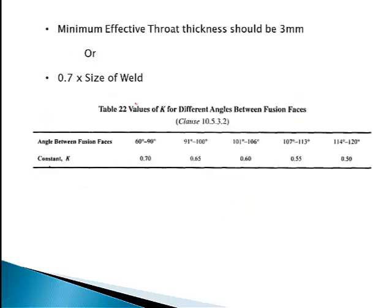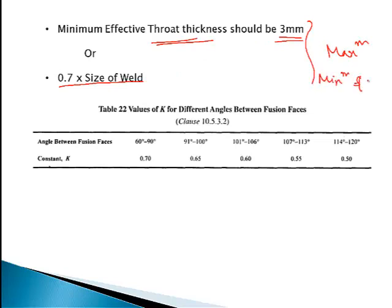Depending on the size of weld, the throat thickness should be a minimum of 3 mm or 0.7 into size of weld. For our design purposes, we mainly use 0.7 into size of weld.